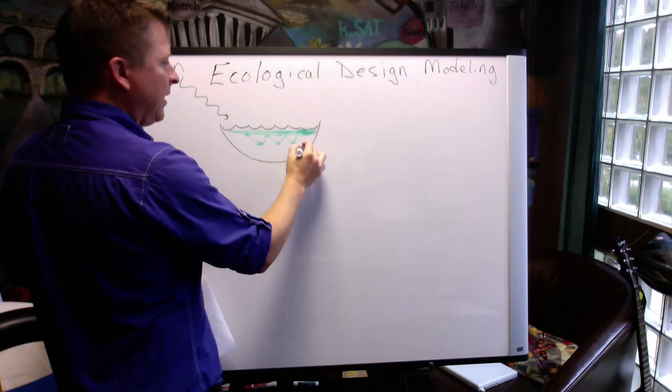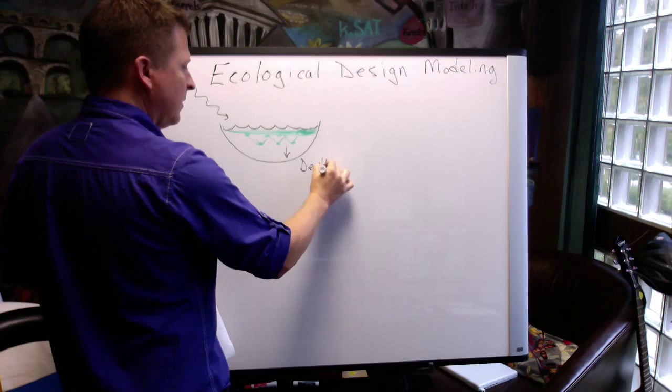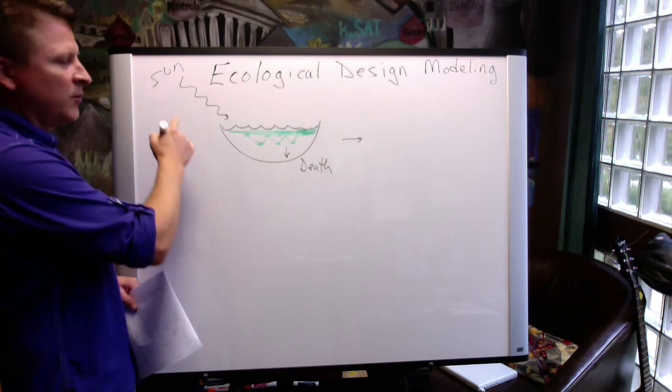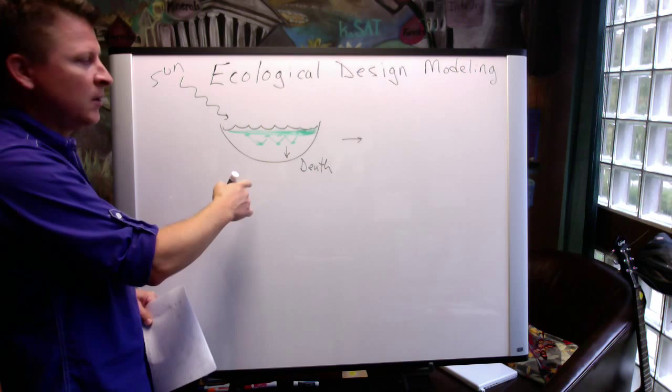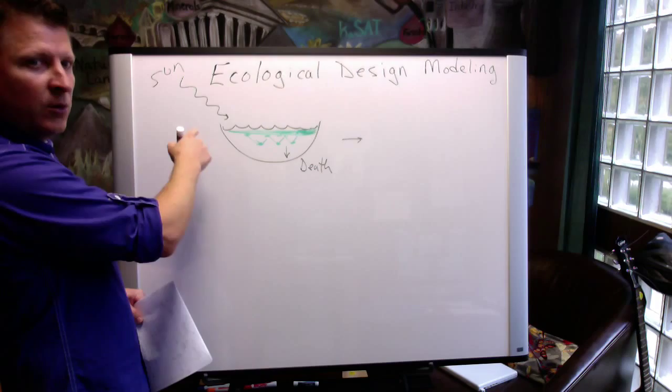Sun and the algae die, so we have death of algae. So we have a process where there's a flow of energy driving biological production to create an ecosystem, and then there's death of the organisms. So there's a cycle.